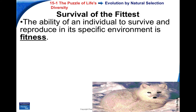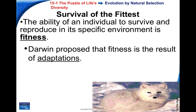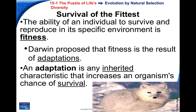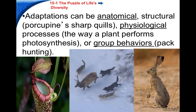Darwin called the ability of an organism to survive and reproduce in its specific environment its fitness. You've all heard the saying 'survival of the fittest.' It's based on the organism's adaptations — its ability to survive in its own environment. An adaptation is any inherited characteristic that increases the organism's chance of survival. For example, the Arctic fox's white fur is not a coincidence — it allows it to camouflage with its environment. Adaptations can be anatomical, structural like porcupine's quills, physiological like chemical processes inside the body, or behavioral like pack hunting.